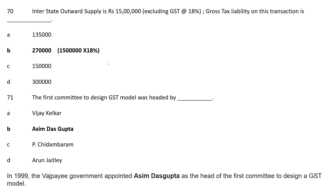Question 69: Interstate outward supply is Rs 15 lakh excluding GST at 18%. Gross liability on this transaction is — Option A: 1,35,000; Option B: 2,70,000; Option C: 1,50,000; Option D: 30,000. The correct answer is Option B, Rs 2,70,000. Taking 18% of Rs 15 lakh gives a gross liability of Rs 2,70,000.